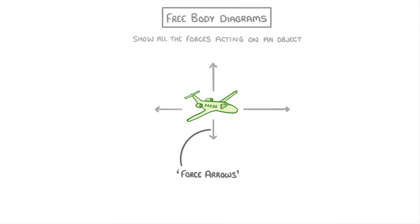So if we took the example of a plane flying through the sky, we would draw its free body diagram by adding a bunch of different arrows that represent all the forces acting on the plane.